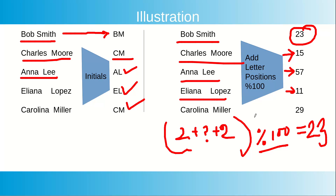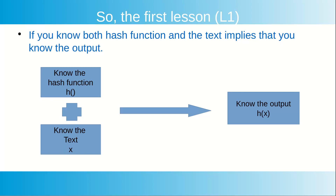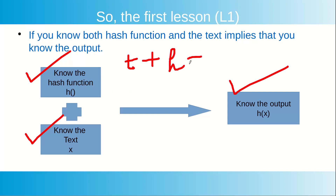That is the basics of the hash function. The first lesson is: if you know the hash function logic and you know the text, then you can get the output. Text plus hash function equals the output. If you know what logic is being applied and you know the text, then applying that hash function gives you that output. This is lesson number one: if I know the text and the hash function, I can compute the hash function's output.